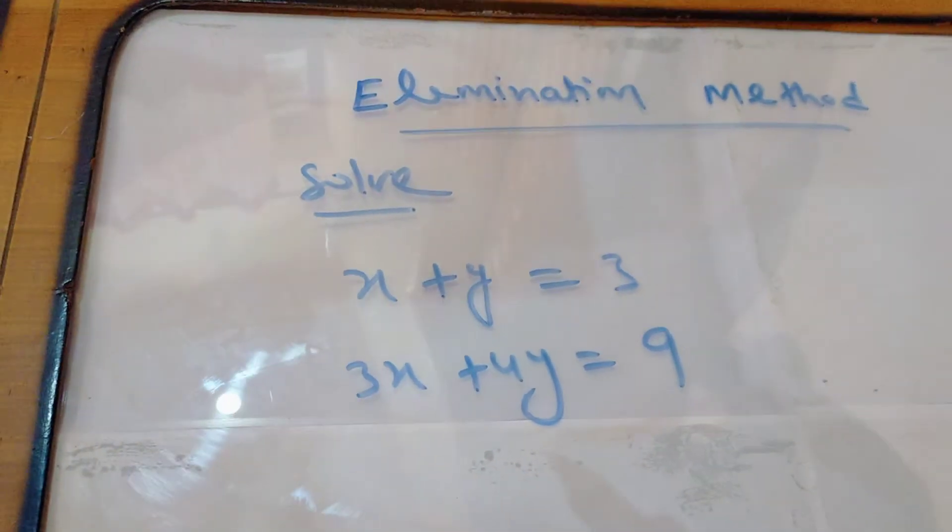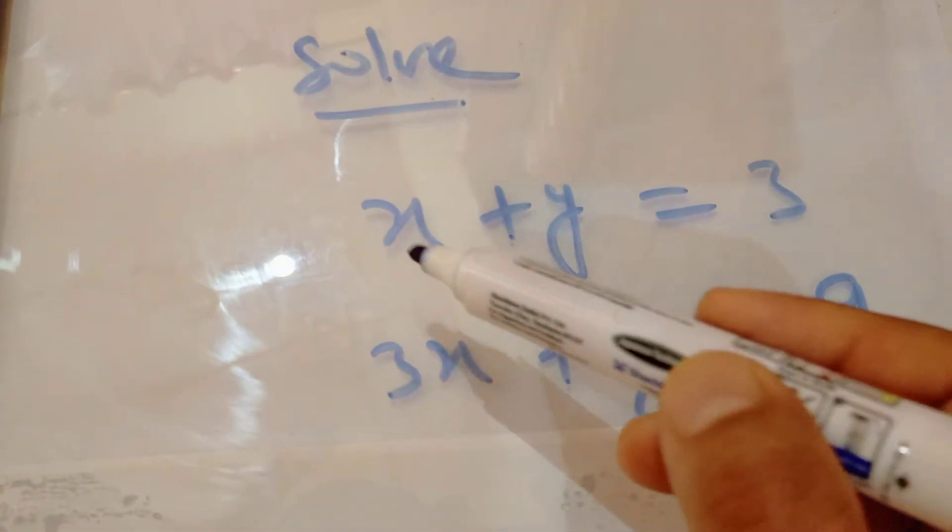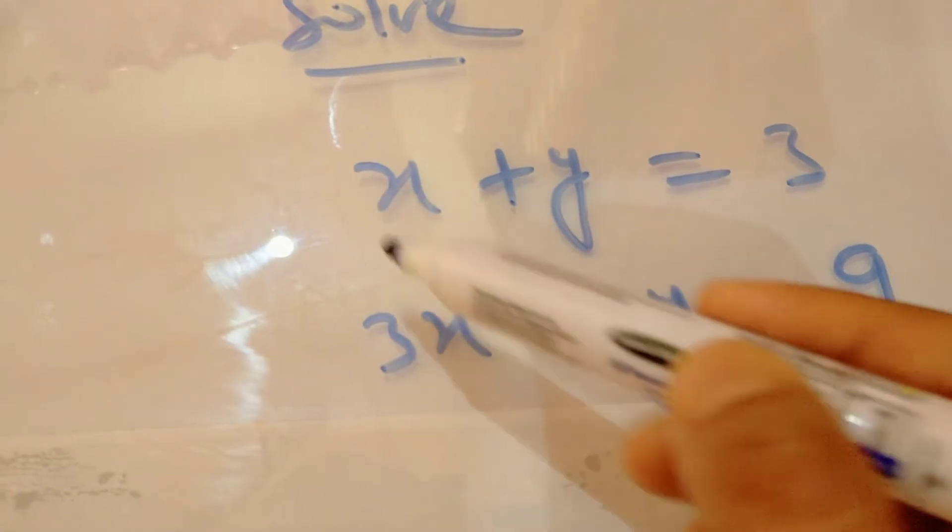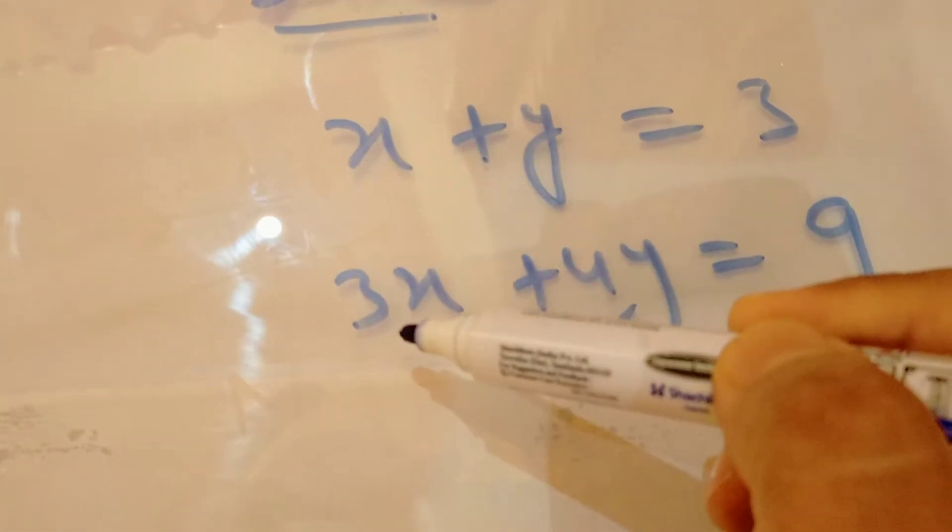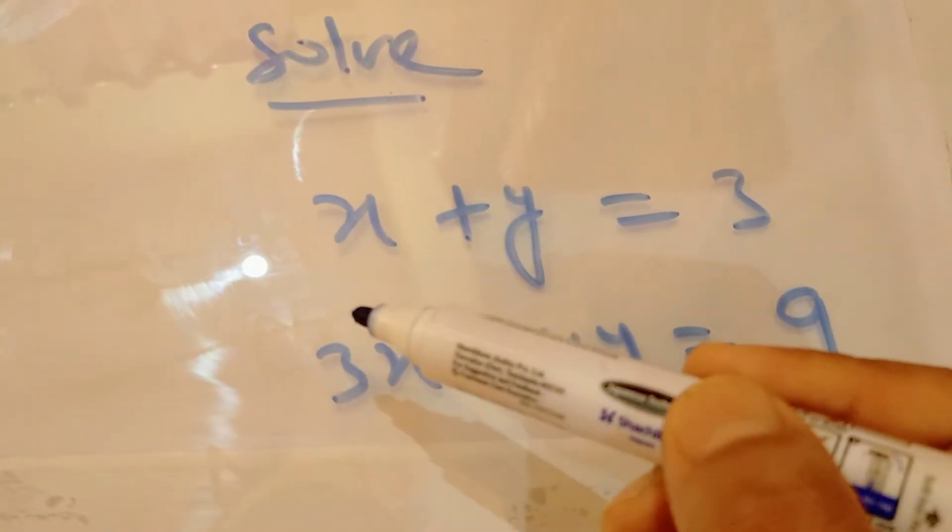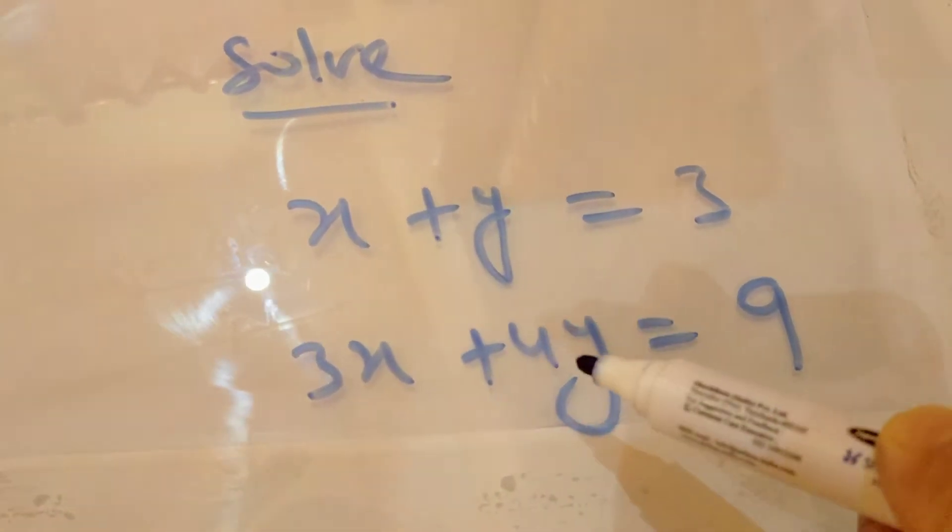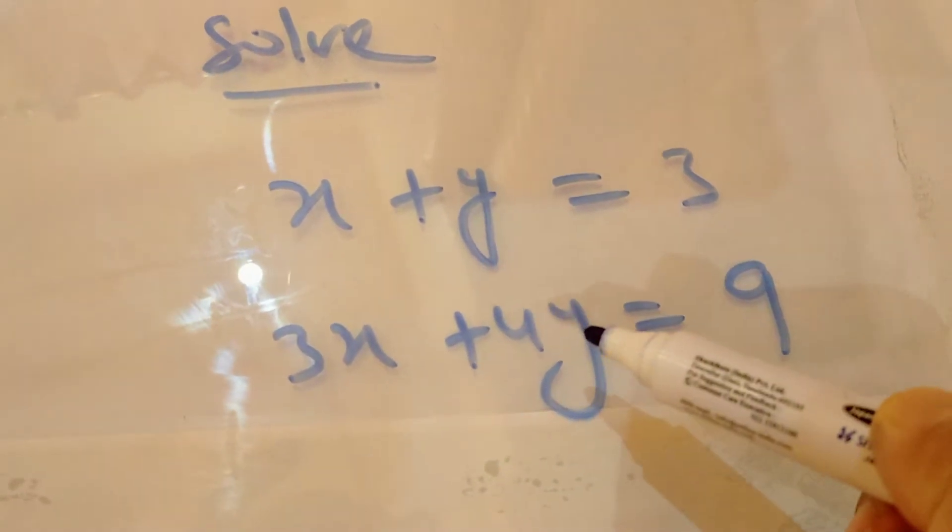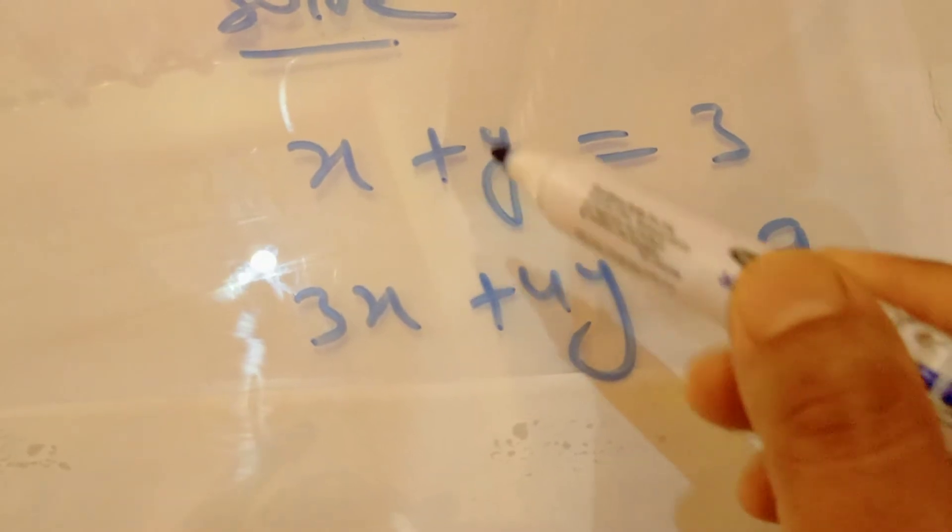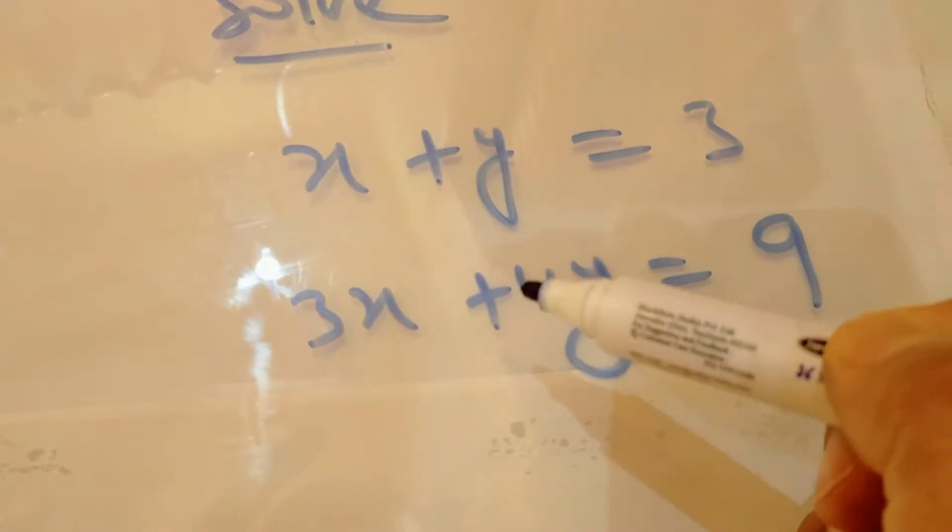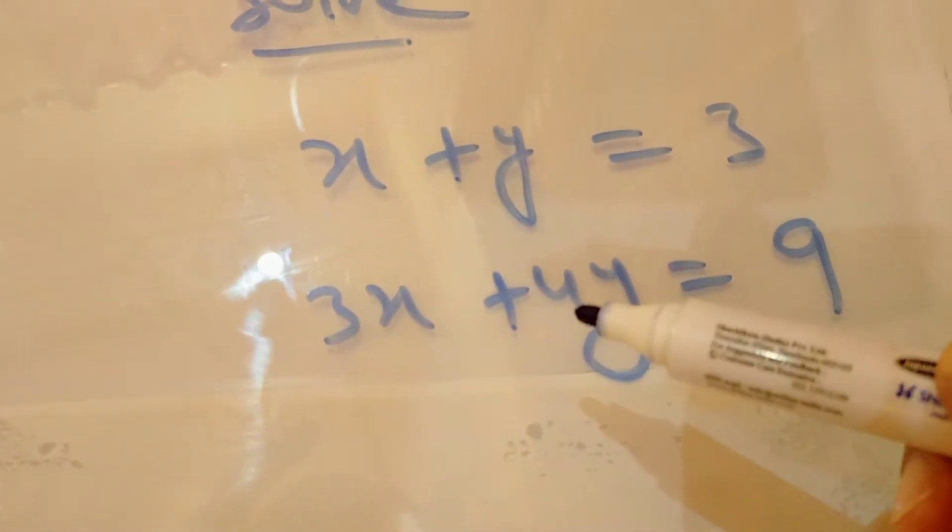So what is the elimination method? It means we will equate the coefficients. Here the coefficient of x is 1, but here coefficient of x is 3, so we will make them equal and then cancel out. This is called elimination by equating coefficients. Here the coefficient of y is 4 but here coefficient of y is 1, so I want to make them equal. It is up to me whether I make the coefficients of x equal or y equal.